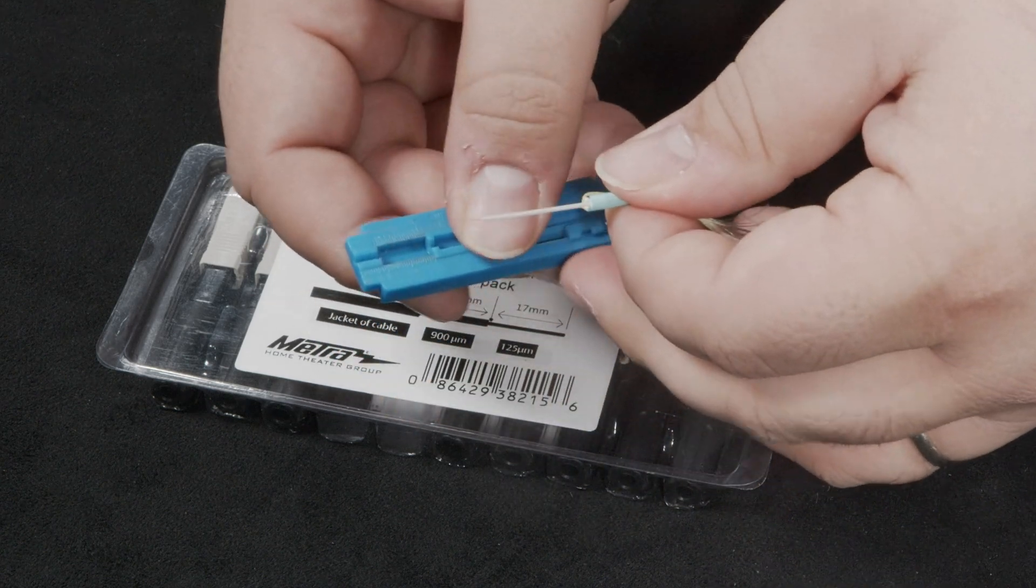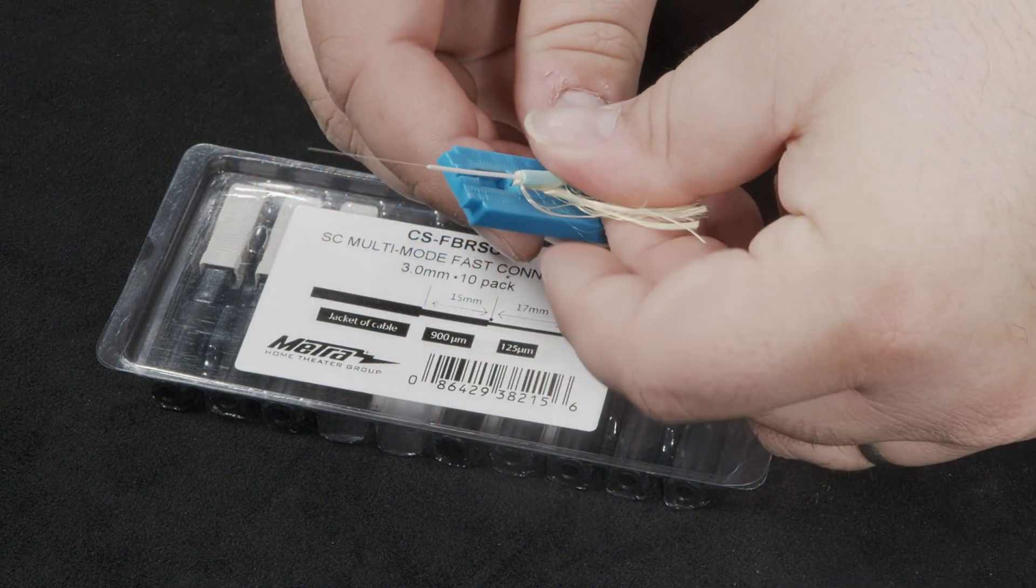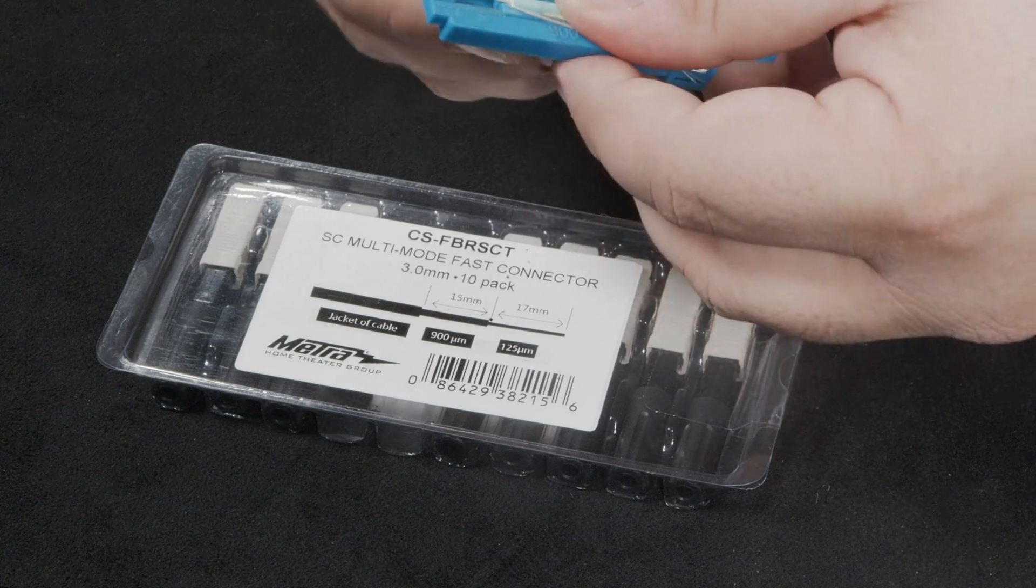Take the blue fiber guide and, using the sliding mechanism, line the inner shielding up with the desired measurement. In this case, 17 millimeters.